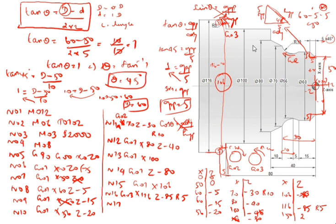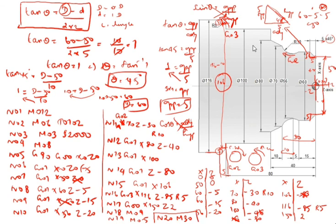N17 G00 X150 Z2 — tool retracts to X150, Z2. N18 M09 — coolant off. N19 M05 — spindle off. N20 M30 — end of the program.